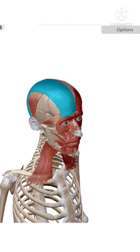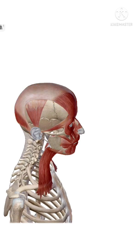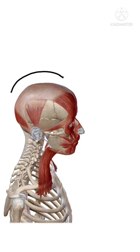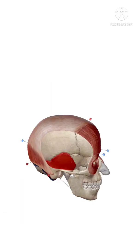The frontal belly is present in the frontal part, and in between these two bellies there is a broad aponeurosis. This is your broad aponeurosis, this is your occipital belly, and this is your frontal belly.